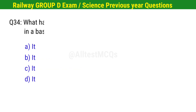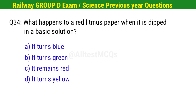Question No. 34. What happens to a red litmus paper when it is dipped in a basic solution? Correct option is A. It turns blue.